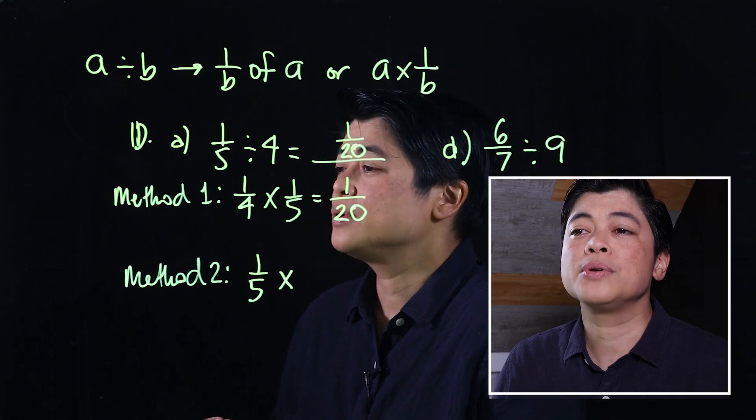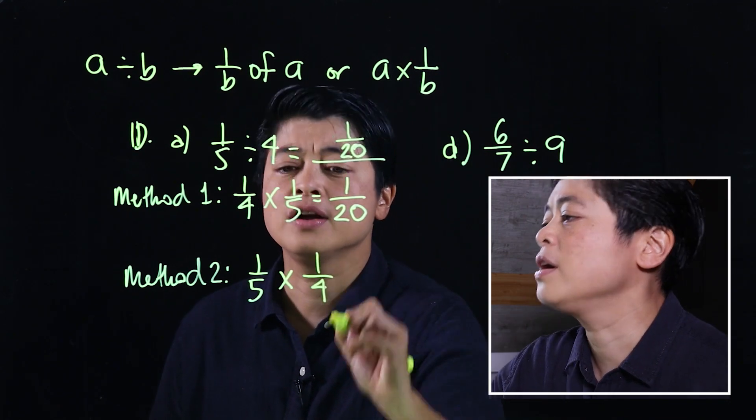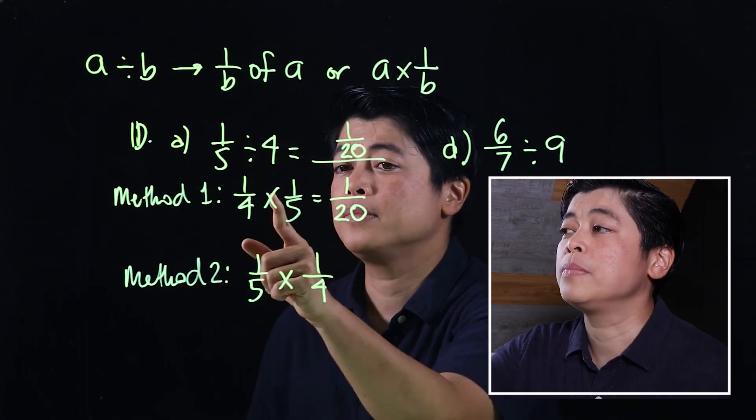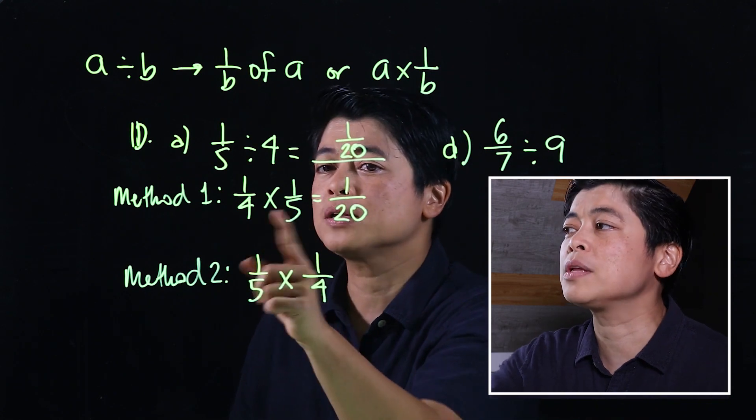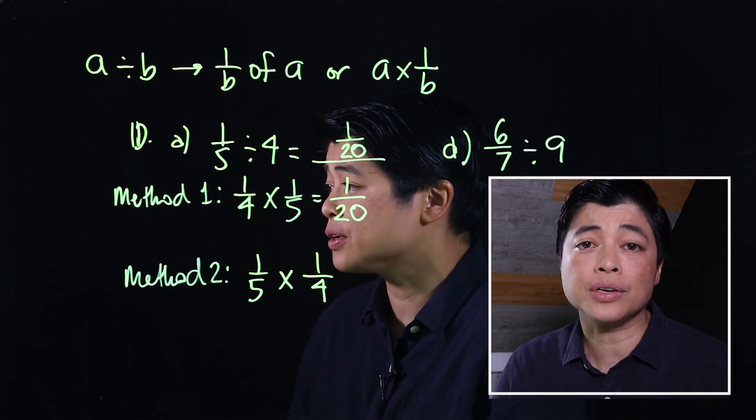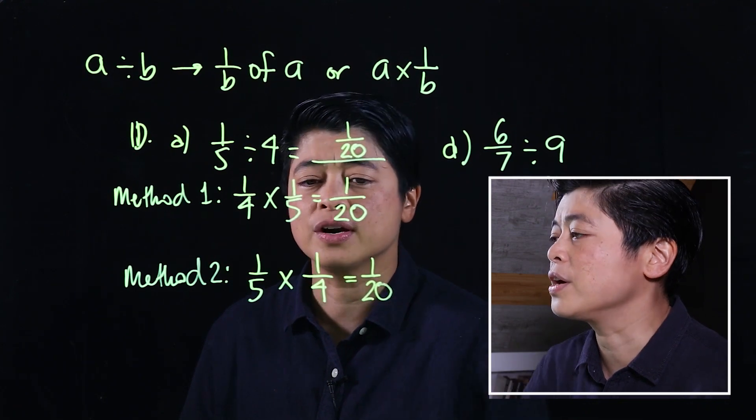Since 4 is a whole number, that's over 1. When you take the reciprocal of that, it becomes 1 over 4. From grade 2 and grade 3, we know that multiplication can be in any order. Therefore, this will also give us 1 over 20.